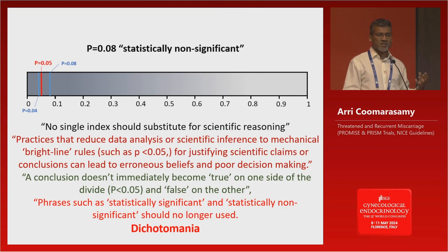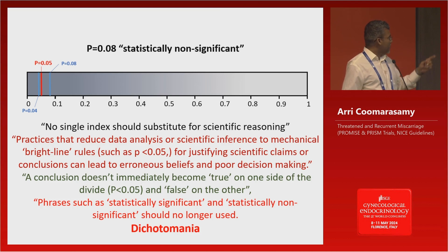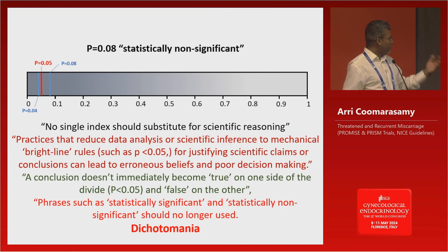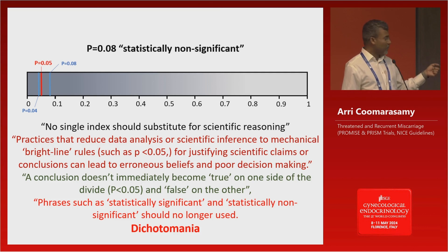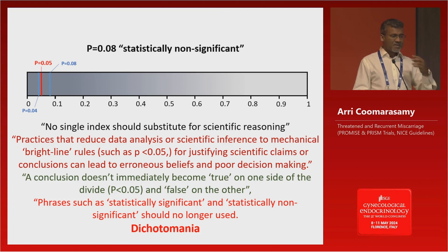You should really read these papers if you use p-values in your daily practice. The American Statistical Association says that no single index should substitute for scientific reasoning. Practices that reduce data analysis or scientific inference to mechanical bright-line rules — such as p-value less than 0.05 or more than that — can lead to erroneous conclusions. A conclusion doesn't immediately become true on one side of the divide and false on the other. Phrases such as 'statistically significant' and 'non-significant' should not be used.